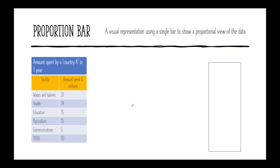Now let's talk about ways that we could represent data, and we're definitely going to be talking about bars and charts. The first thing we're going to talk about is a proportion bar. What is a proportion bar? It's a visual representation using a single bar to show the proportional view of data. It might sound fancy, but it's actually quite simple.